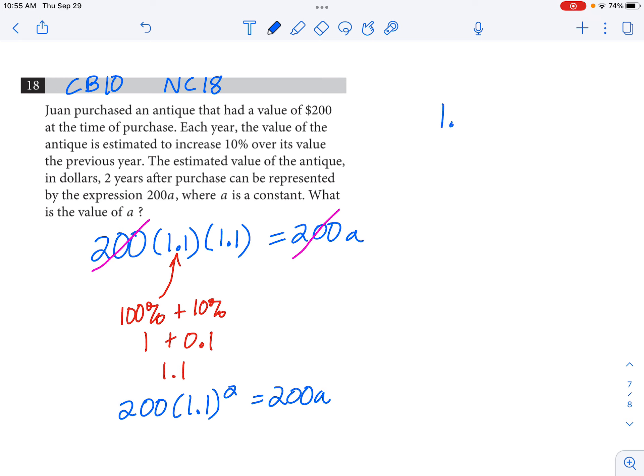Now I know that 1.1 times 1.1 is 1.21, so that's the number that I'm going to report for my value of a. a equals 1.21, so that's what I'm going to grid in on my test booklet.